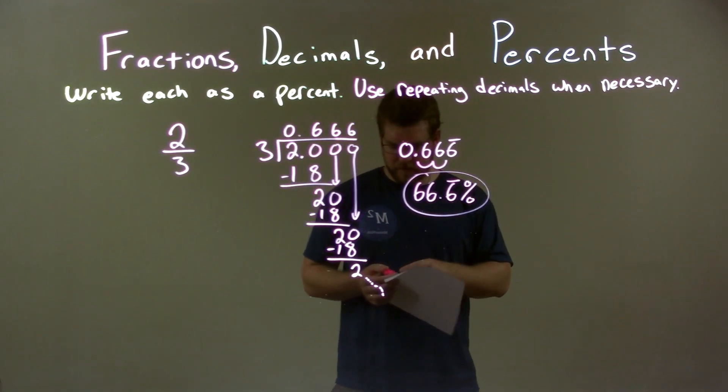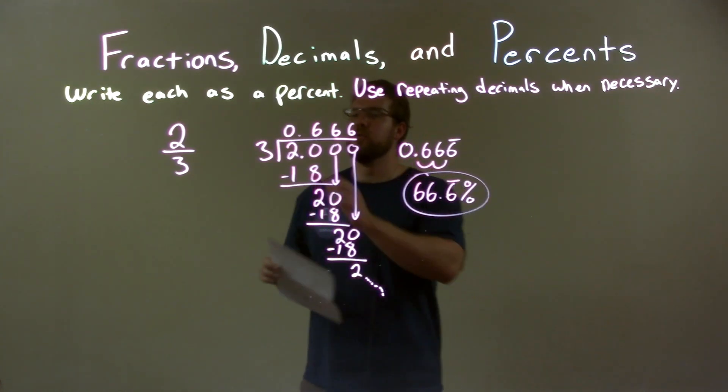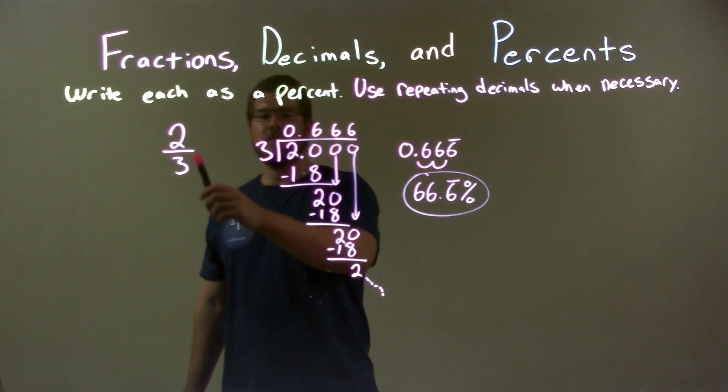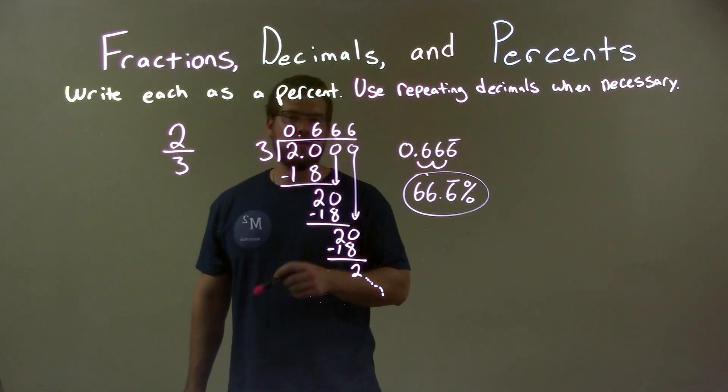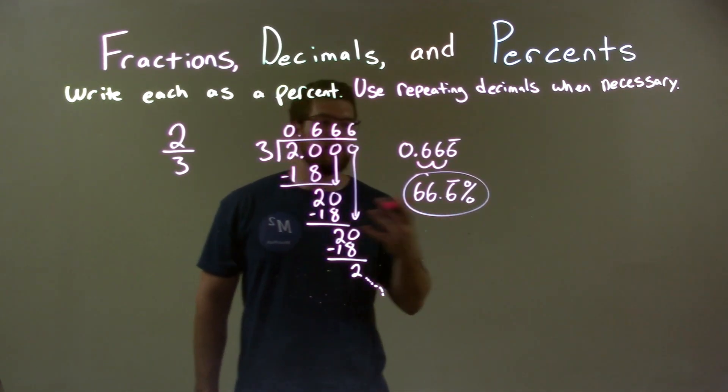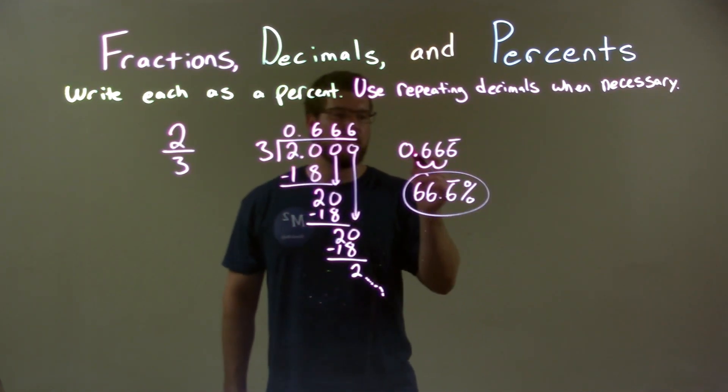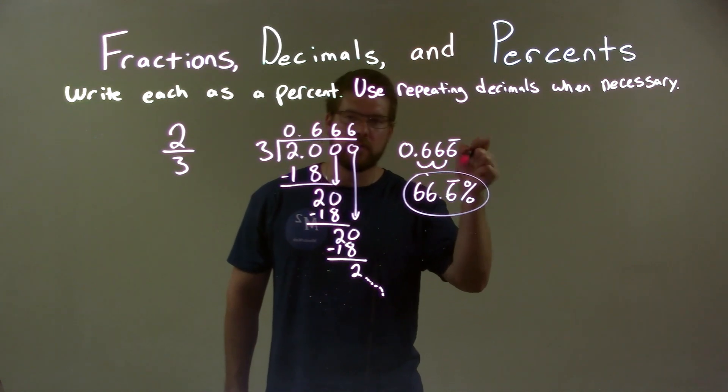So quick recap: we're given two-thirds and we have to write that as a percent. I did long division of three goes into two, and I found out that that was 0.666666 repeating forever. I then converted that decimal to a percent by moving the decimal place two spots to the right, which gave me my final answer of 66.6%.